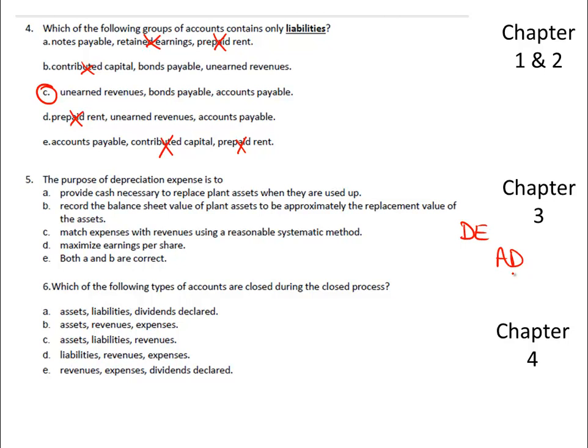B, record the balance sheet value of the plant assets to be approximately the replacement value. No, it's not the replacement value, because we're showing the usage of the original cost. So it's not B. C, match expenses with revenues using a reasonable, systematic method, and that is what it is.